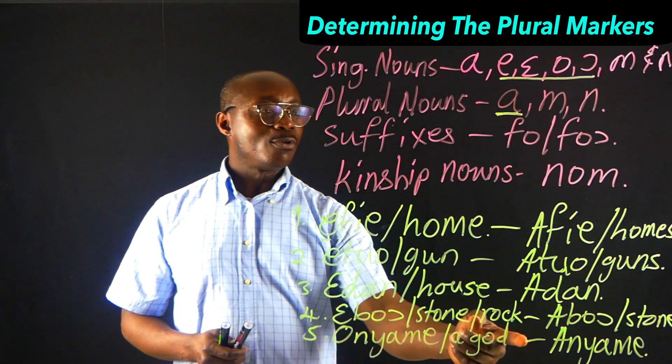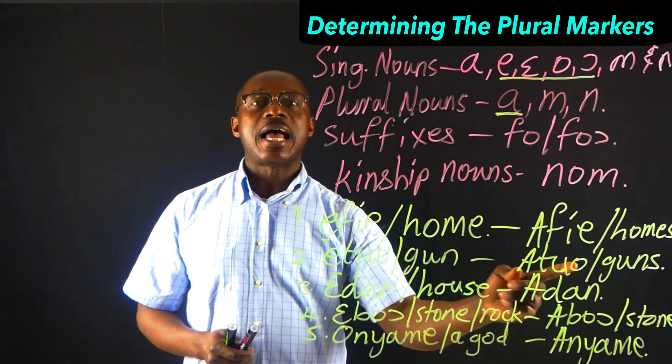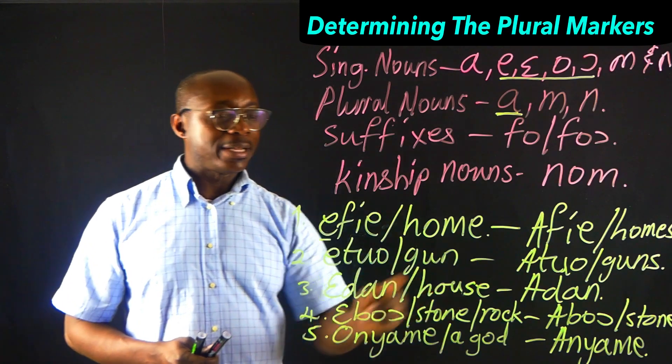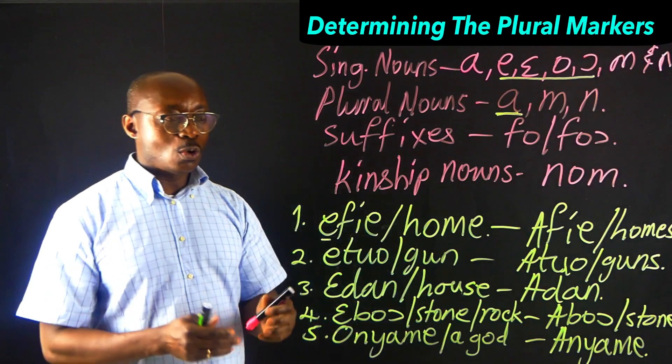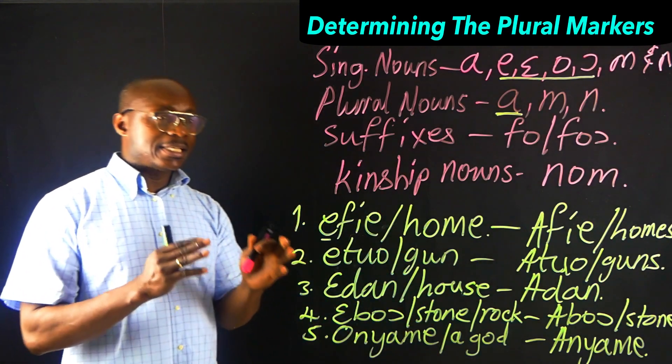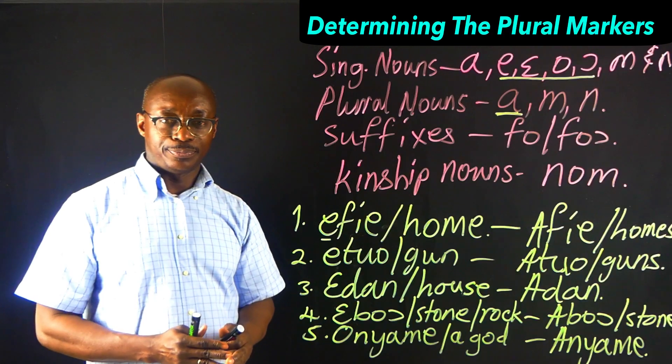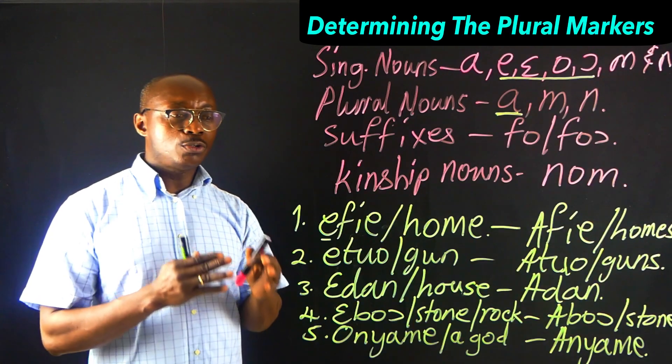We also have 'abor' meaning stone, plural form 'abor' meaning stones. And 'onyami' meaning God, in plural form becomes 'anyami' — Gods.